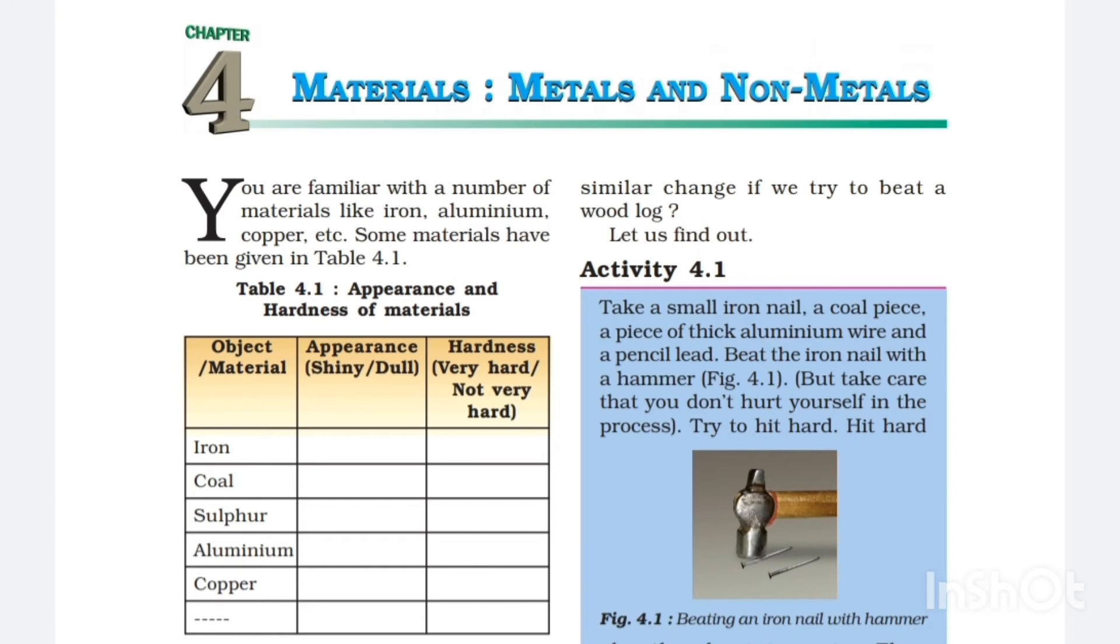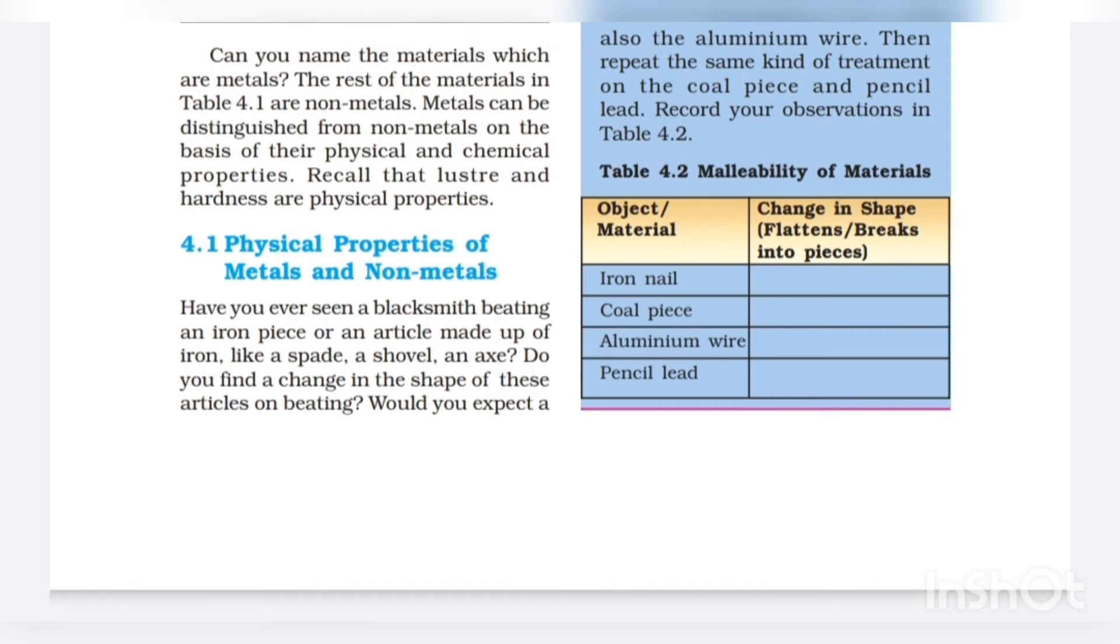Figure 4.1: Beating an iron nail with hammer. Also the aluminium wire. Then repeat the same kind of treatment on the coal piece and pencil lead.